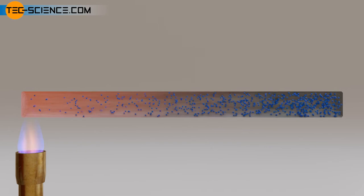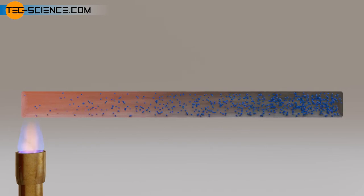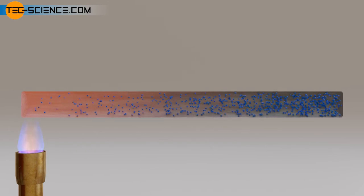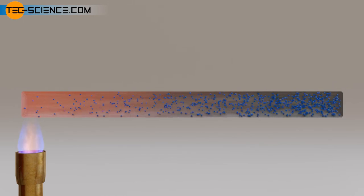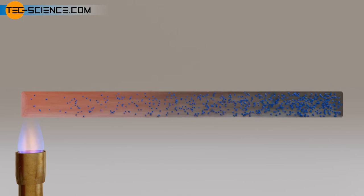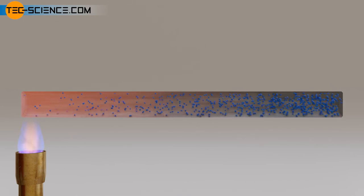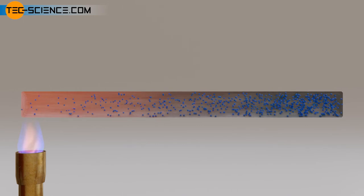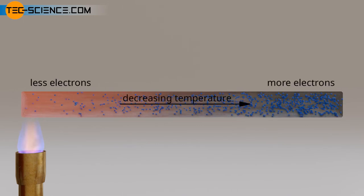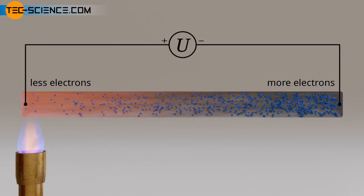At this end, the kinetic energies of the electrons are lower and the electrons accumulate there. The electron gas behaves literally like a real gas whose particles occupy a larger space when heated, and the particle density decreases accordingly. The hot end of the wire thus has a smaller number of electrons than the cold end. As a result, an electrical voltage is obtained between the two ends, also known as thermoelectric voltage.